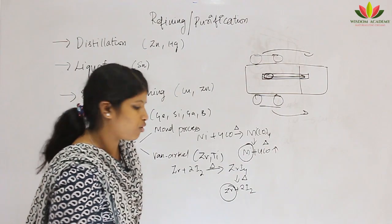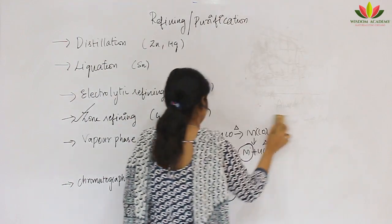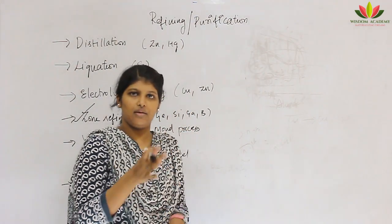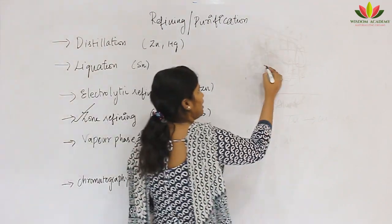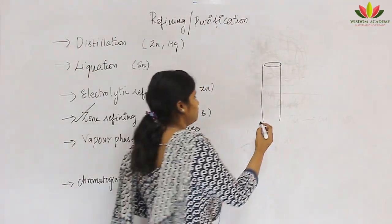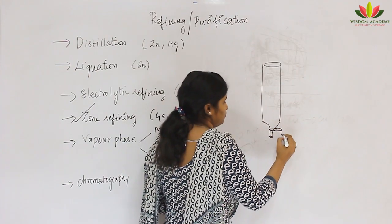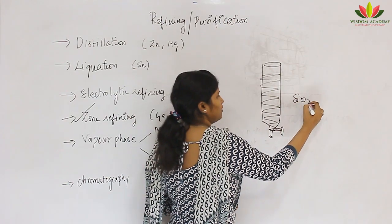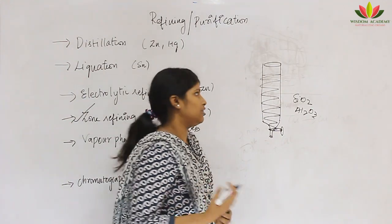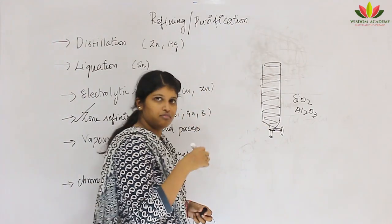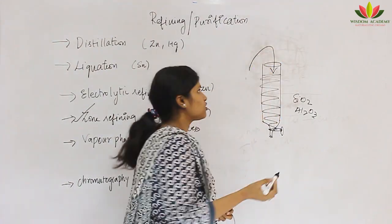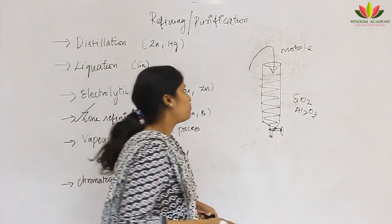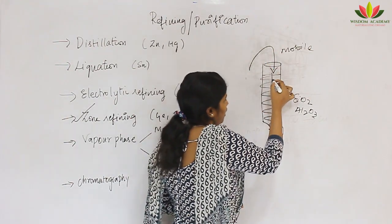The sixth method is chromatography, based on the principle that different compounds are adsorbed at different levels. In column chromatography, a column is filled with a stationary phase such as silica or alumina — a good adsorbent. The mixture is dissolved in a solvent (mobile phase) and poured from the top. The mobile phase moves through the stationary phase from top to bottom.